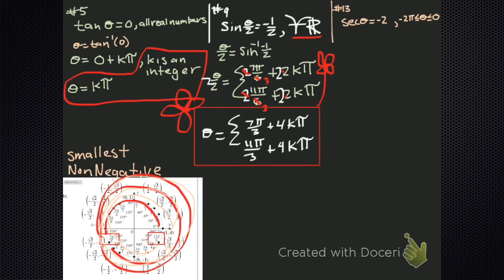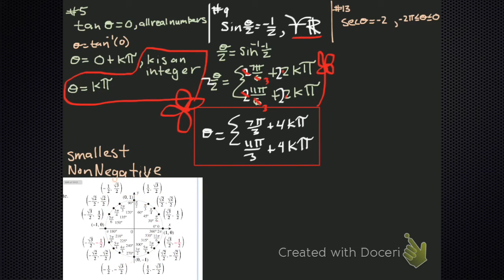Your secant, cosecant, cotangent game is weak — let's turn it into something more familiar. Let's turn it into cosine using the reciprocal identity. Then we find out where the cosine is equal to negative one-half. I have two spots on my unit circle: two pi over three and four pi over three. We're in the interval from negative two pi to zero, so we don't need the kπ — we just need a few discrete answers. But they need to be negative angles.